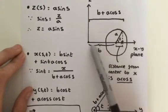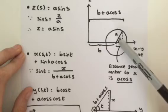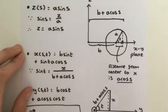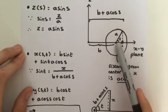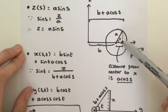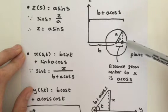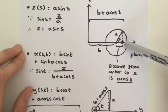This distance will vary. B doesn't vary but A cosine S will vary as the angle S varies. So we're literally looking at this distance from the centre to the point that is projected by the point on the circumference on the XY plane.